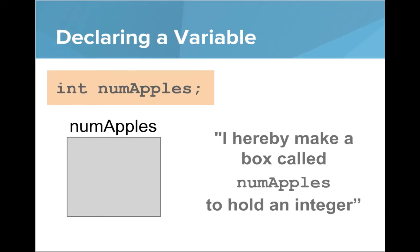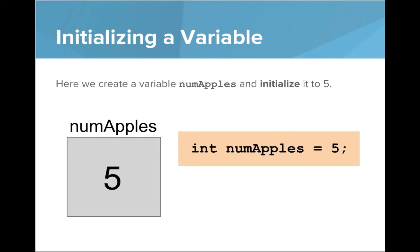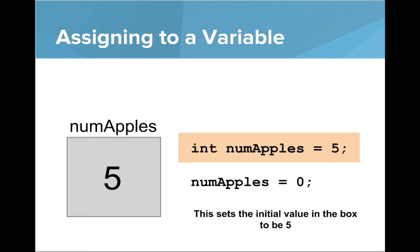The other important thing is initializing a variable. Here with this code we're creating the variable numApples and initializing it to 5. Initializing both creates the variable and sets its initial value. Here you see the box numApples has the value 5.